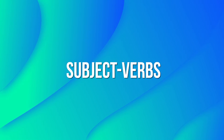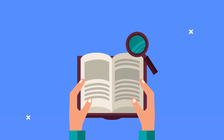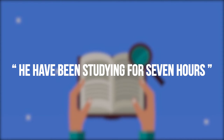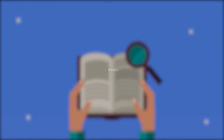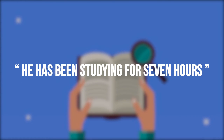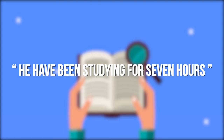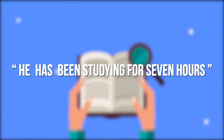Mistake 2: Subject-Verb Agreement. Let's cover a sentence about studying: "He have been studying for 7 hours." The use of the word "have" in this sentence is totally incorrect. Here's the correct way to write this sentence: "He has been studying for 7 hours." Swapping out the word "have" with "has" has certainly made a world of difference in that sentence.